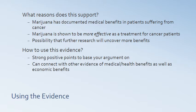How would we use this source? These are just strong positive points. This could be a point in and of itself — marijuana's medical uses for cancer treatment could be a whole paragraph or series of paragraphs. You can connect this with other evidence of medical and health benefits, as well as possibly economic benefits, depending on discussions of the cost of marijuana versus other treatments. This is straight-up good evidence, a good reason that you can have as one of the main pillars of your argument in a paper like this.